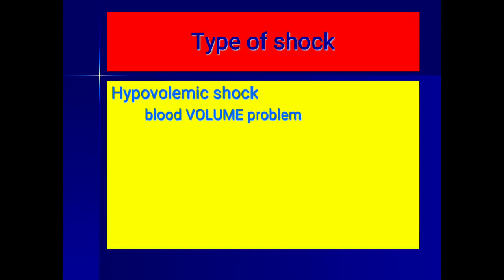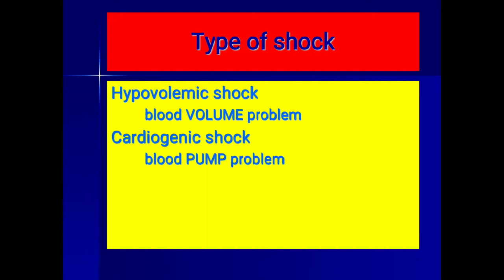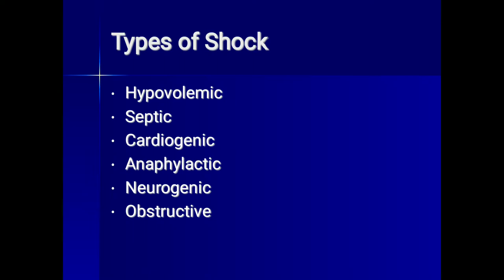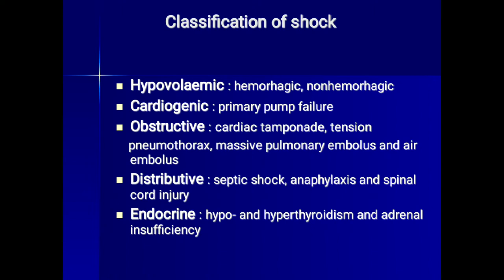The various types of shock include: hypovolemic shock (blood or fluid volume problem), cardiogenic shock (pump problem), and vasogenic shock (blood vessel problem). Types can also be labeled as hypovolemic, septic, cardiogenic, anaphylactic, neurogenic, and obstructive. Distributive shock includes septic, anaphylactic, and spinal/neurogenic shock. Obstructive shock includes cardiac tamponade, tension pneumothorax, massive pulmonary embolus, and air embolism. Endocrine shock can be due to hypo- or hyperthyroidism and adrenal insufficiency.